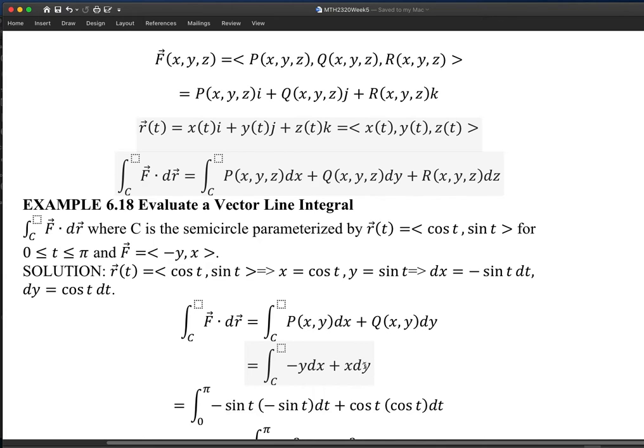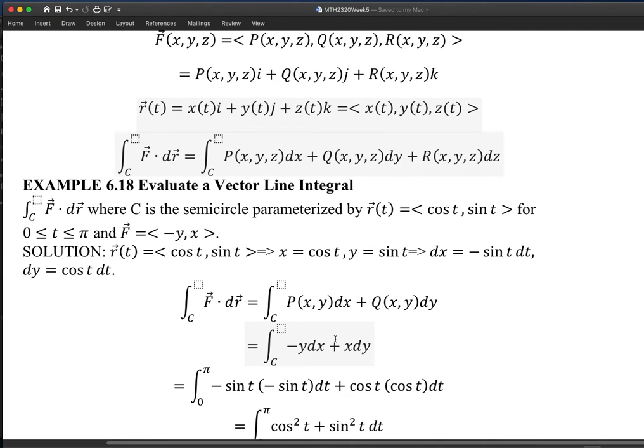For the dx part, I hope you know the line integral has two factors: the vector field and the curve. The curve has an x component and y component. I'm saying x is cosine t, y is sine t. Accordingly, dx is negative sine t dt, and dy is cosine t dt.